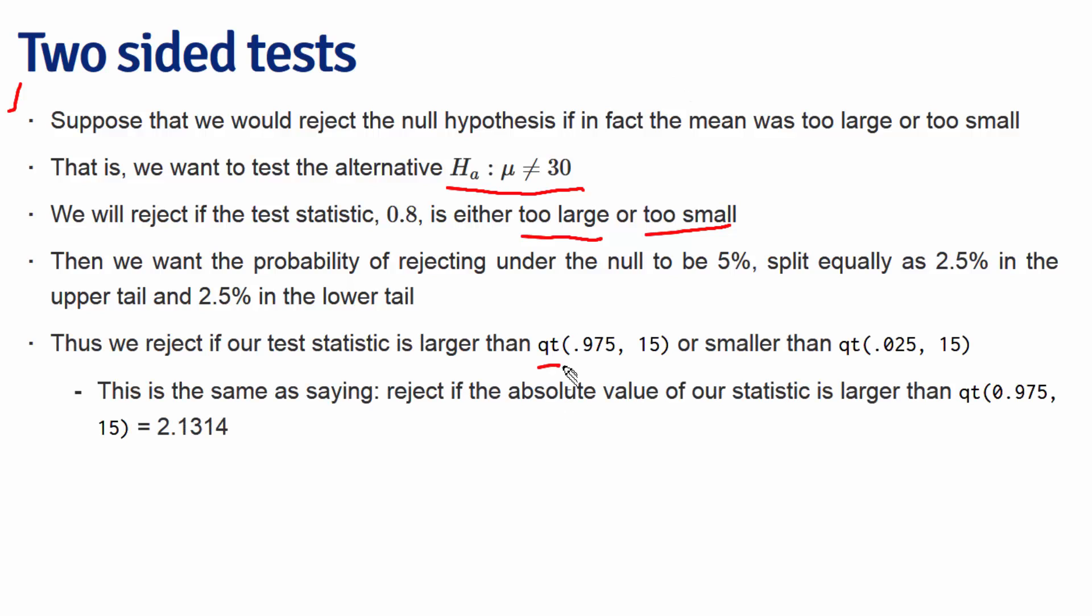So now instead of qt at 0.95, we're going to do qt at 0.975, again with 15 degrees of freedom.